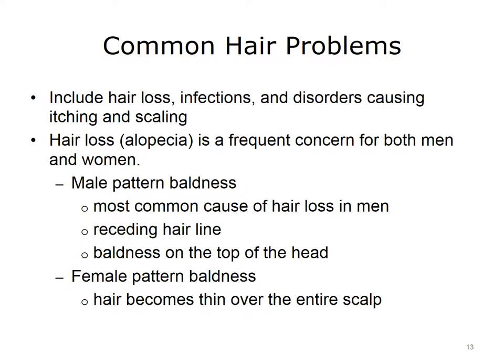Earlier in this lecture, we discussed the organs that comprise the integumentary system, and hair was included on that list. Some of the most common hair problems include hair loss, infections, and disorders causing itching and scaling. Hair loss, or alopecia, is a frequent concern for both men and women. Male pattern baldness is the most common cause of hair loss in men, resulting in a receding hairline and baldness on the top of the head. Women may develop female pattern baldness, in which the hair becomes thin over the entire scalp. Alopecia can be a sign of serious diseases, especially if the hair loss occurs rapidly. Effective treatment is possible for only a small number of patients; some may have to accept baldness or cover it up with wigs or hair transplants.